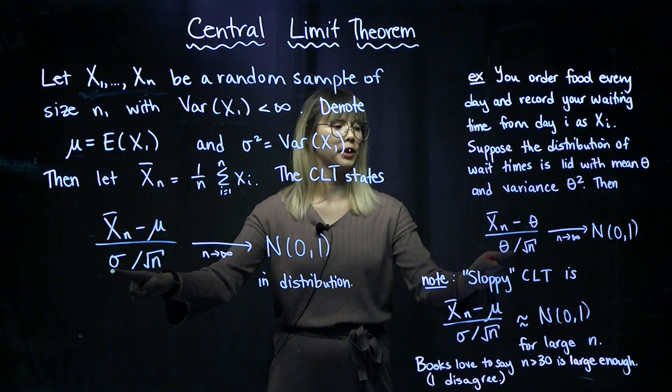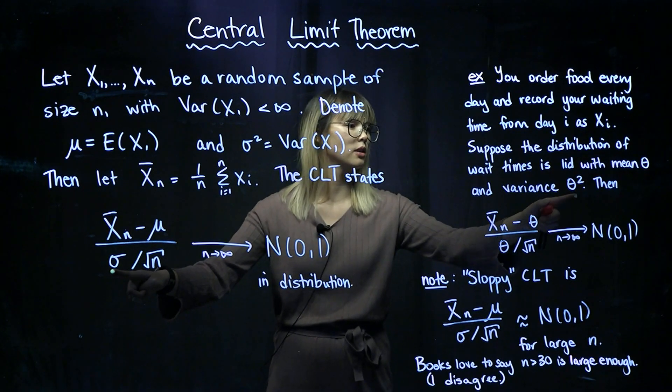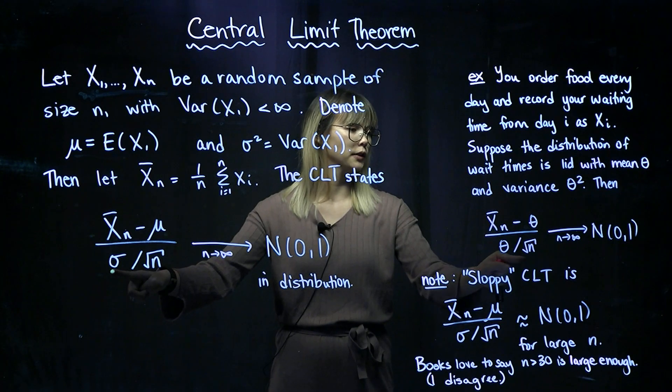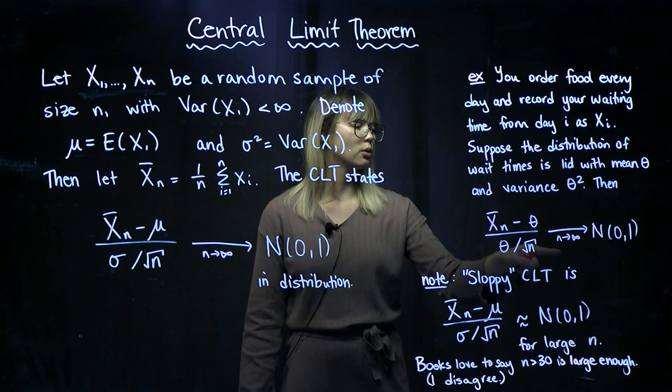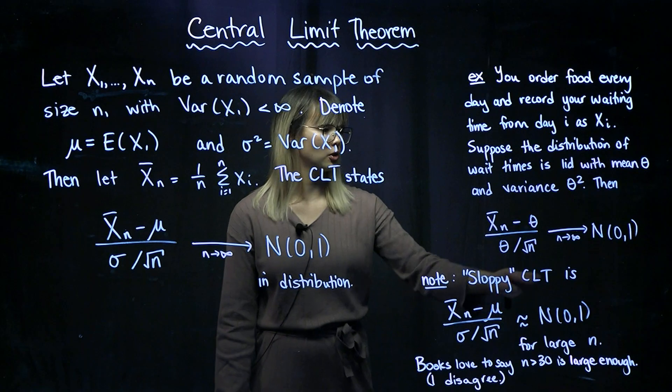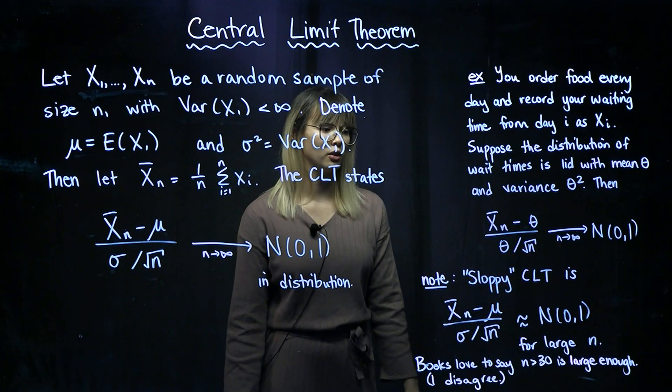now we need the square root of the variance. Variance is theta squared, so we have theta over root n. All of this is going to converge to a standard normal distribution as n goes to infinity.